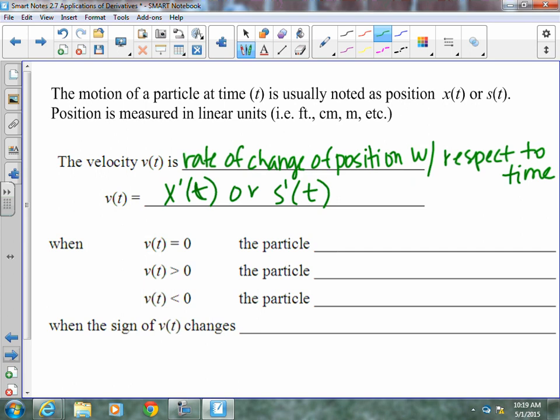When v(t) equals zero, when the velocity is at zero, that means the particle is at rest. When v(t) is greater than zero, that means the particle is moving, typically, they say right, sometimes forward or up.